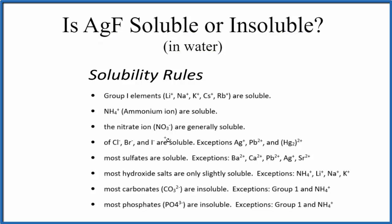If we look at our solubility rules, we really don't have a rule for the fluoride ion. It's a pretty small ion, so it's a little tricky sometimes. When you see silver, you should be careful — silver is often listed as an exception when we're talking about solubility. But these general solubility rules really don't help us with AgF. For that, we'll need a solubility table.